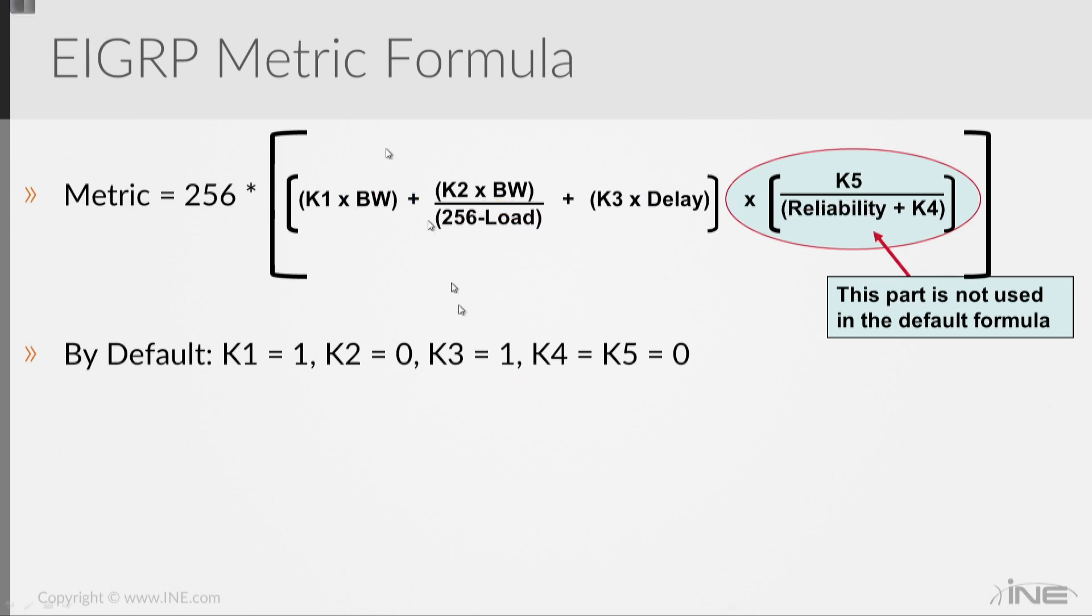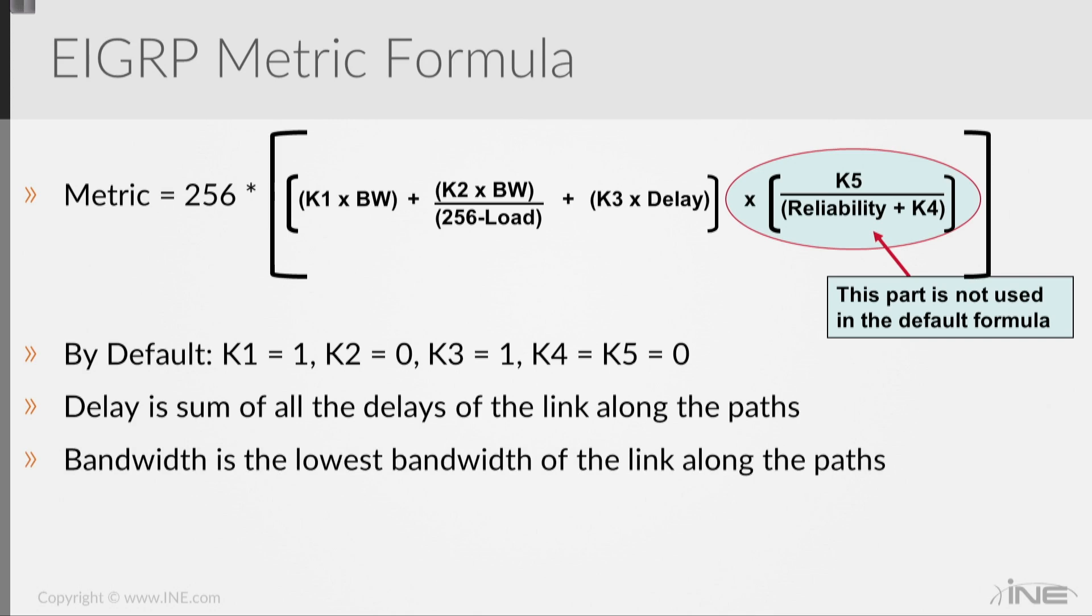is this next section: the delay is the sum of the delays along the path, and the bandwidth is the lowest bandwidth of the link along the path. What does that mean?